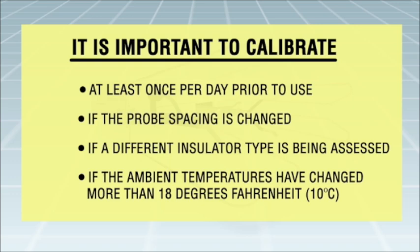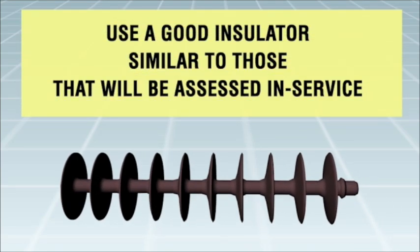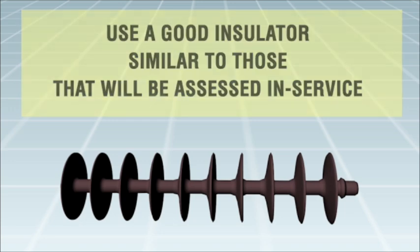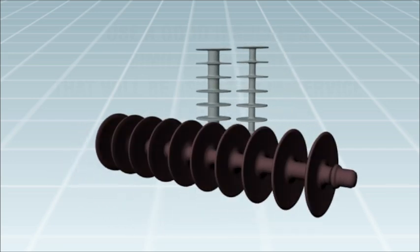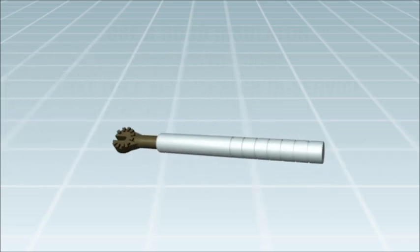To calibrate the NCI polymer insulator tester, use a good insulator similar to those that will be assessed in service. If a good similar unit is not available, the two short good insulator sections provided in the carrying case may be used. These short sections are of two different diameters. Select the short section that has the same fiberglass rod diameter as that of the NCI being assessed. However, use of a known good insulator similar to those being assessed in service is recommended. A short insulated handle is provided to ensure that no physical contact is made with polymer insulator tester during the calibration measurement.